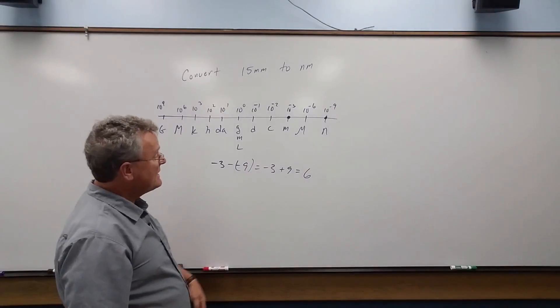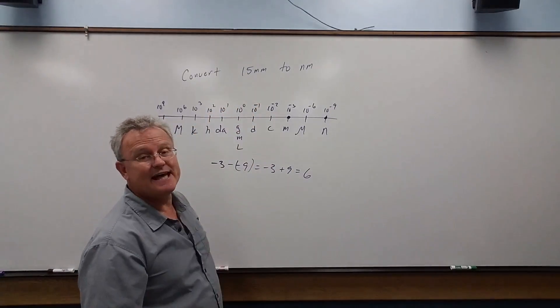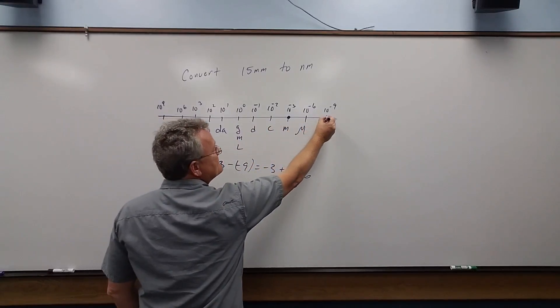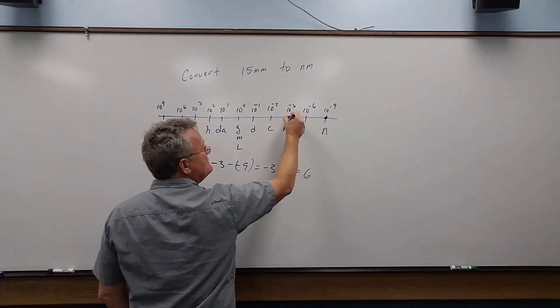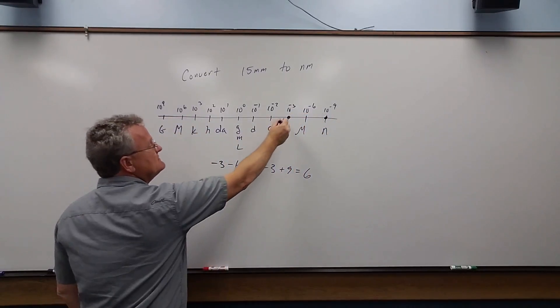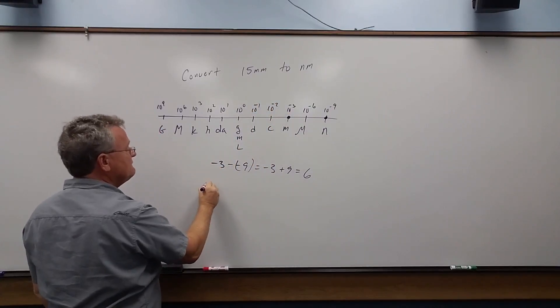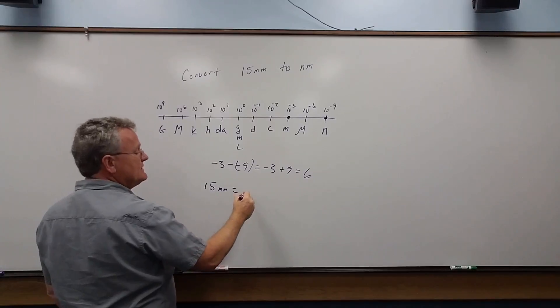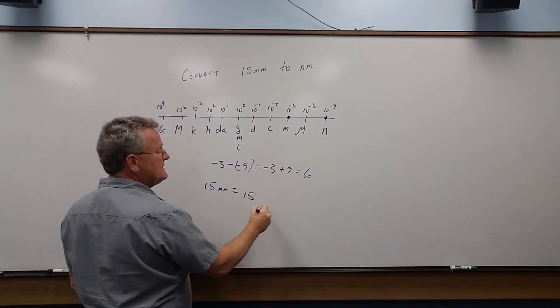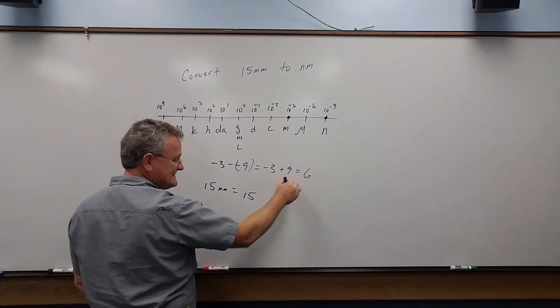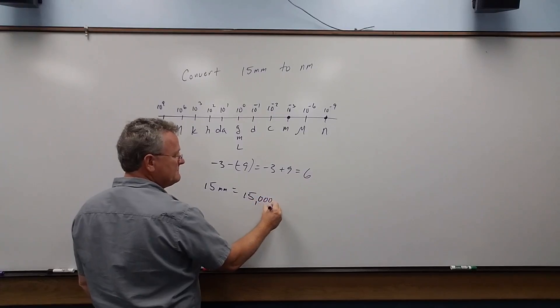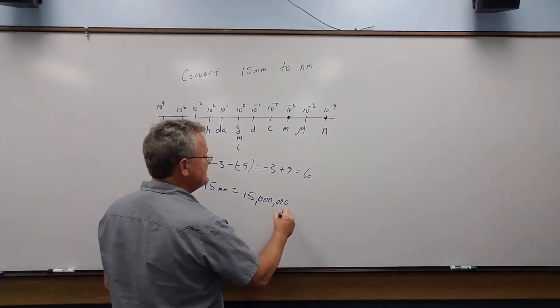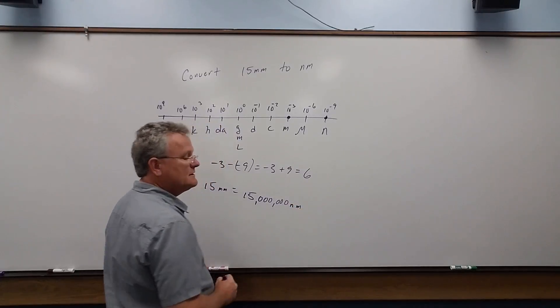So this is saying we need to add a ten to the sixth, or a million, to that. There's a million more of these it takes for one of these. So in other words, 15 millimeters is the same as 15 with six zeros after it, or 15 million nanometers.